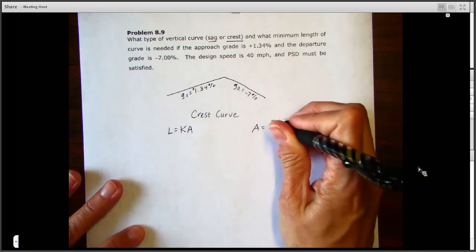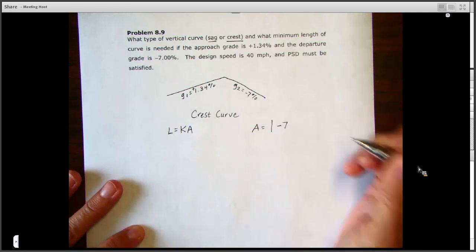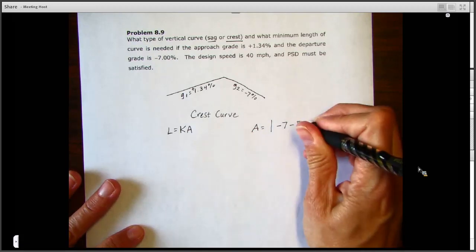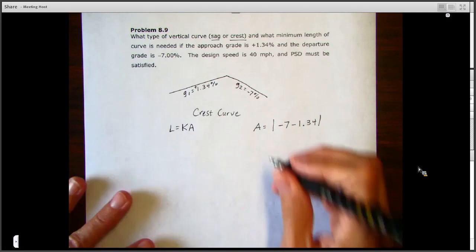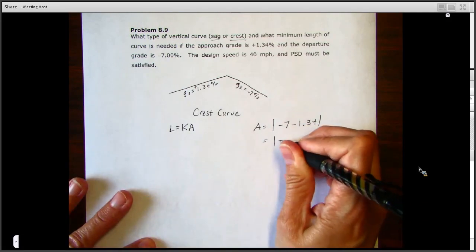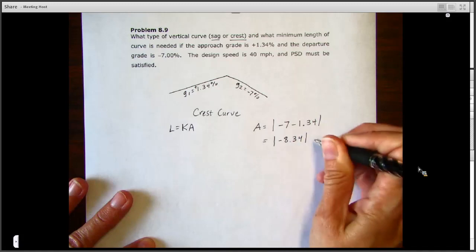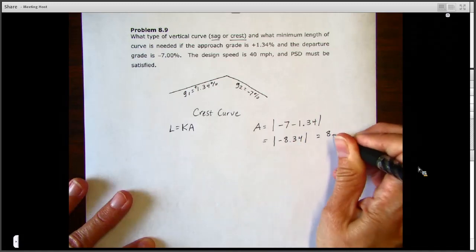We know that A is going to be the algebraic difference of our curves here. So in this case, A is going to be that minus seven, our G2, minus our 1.34, and we'll take the absolute value of that. So we would have minus eight point three four, but with our absolute value we get 8.34 for our A.